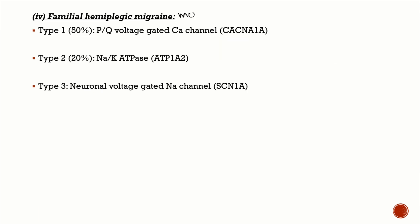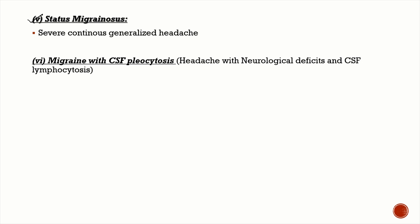Retinal migraine presents with transient uniocular visual loss. Familial hemiplegic migraine has three types: type 1 (most common, 50% of cases) involves mutation in the P/Q voltage-gated calcium channel; type 2 involves mutation in the sodium-potassium ATPase pump; type 3 involves mutation in the neuronal voltage-gated sodium channel. Status migrainosus involves a severe, continuous, unremitting headache that begins unilateral and becomes bilateral, and very rarely migraine can present with CSF lymphocytosis.